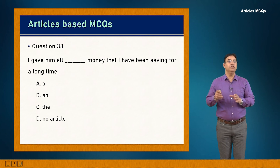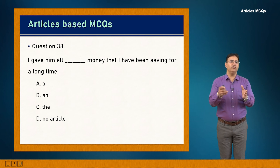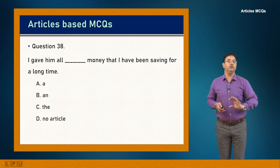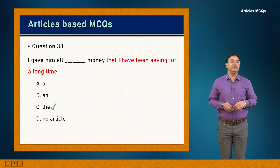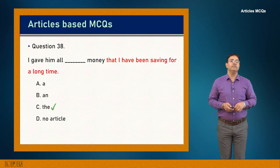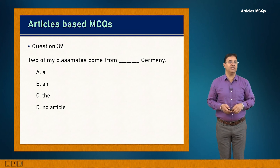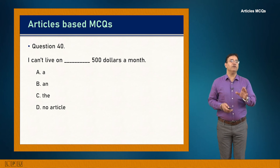Question 38: I gave him all dash money that I have been saving for a long time. The clause 'that I have been saving' identifies a specific set of money — definite. Answer is C: 'I gave him all the money that I have been saving for a long time.' Question 39: Two of my classmates came from dash Germany. Proper name — no article. Answer is D.